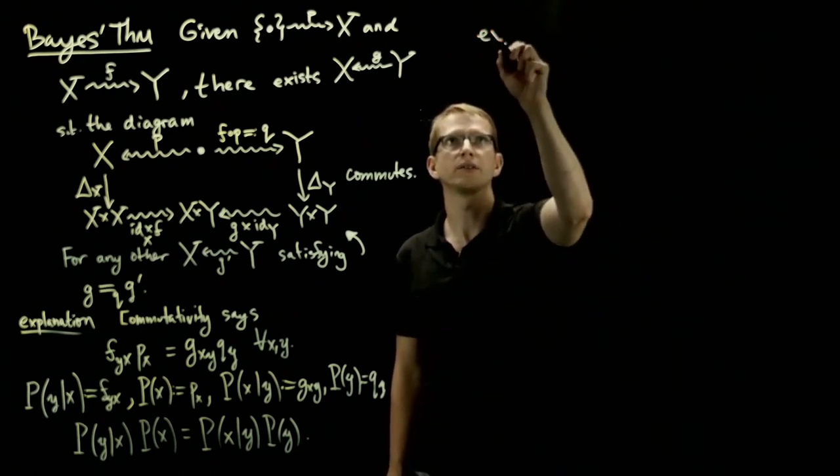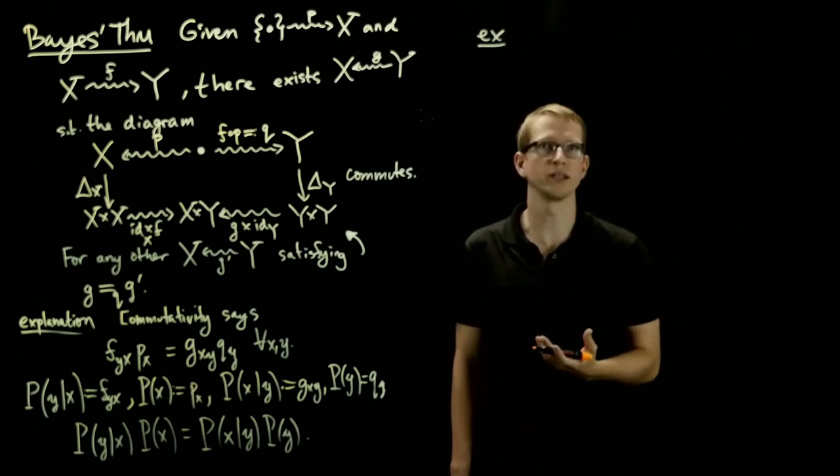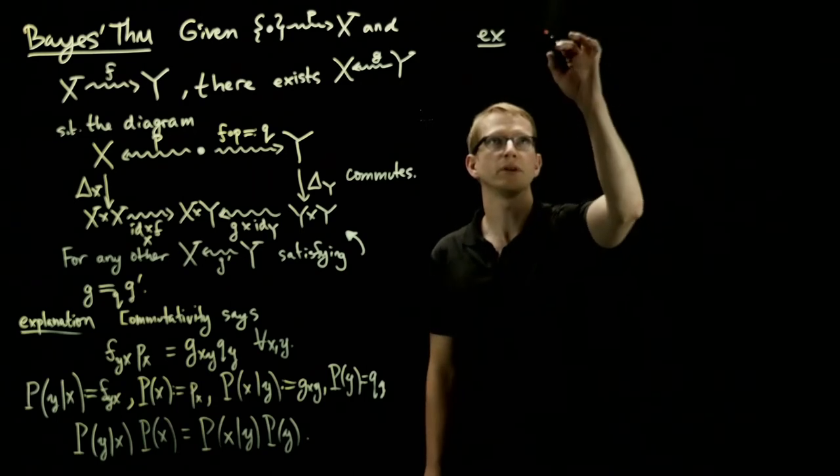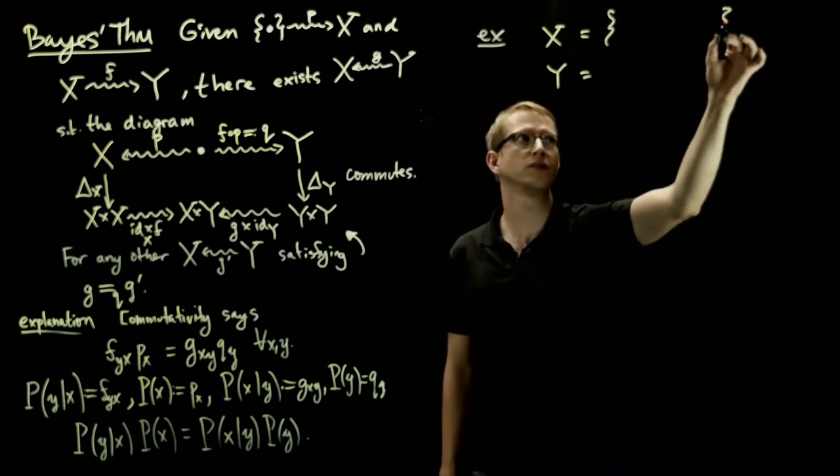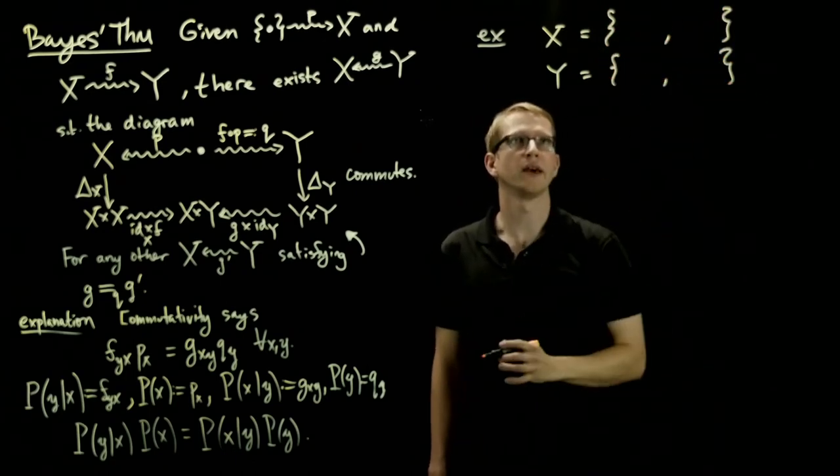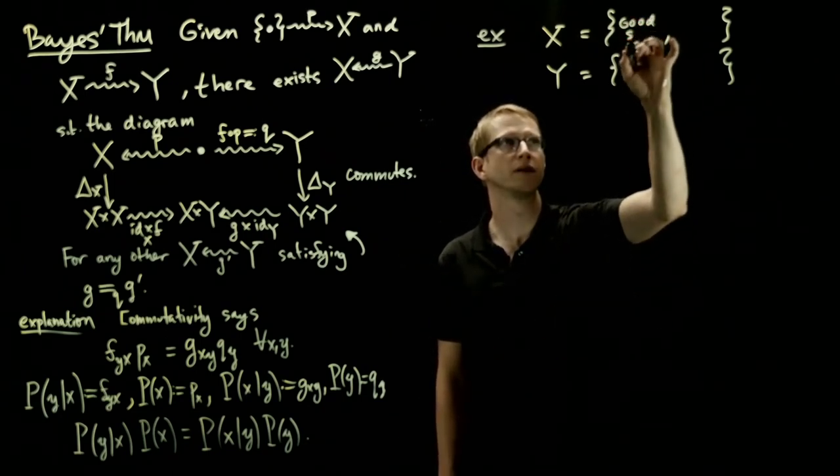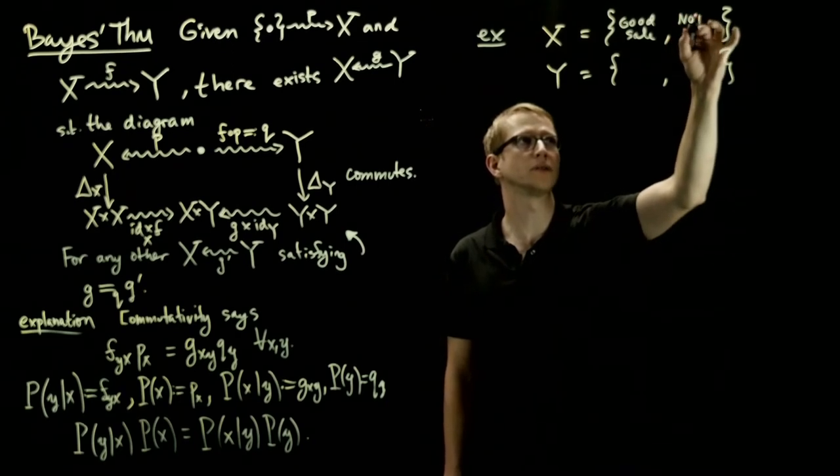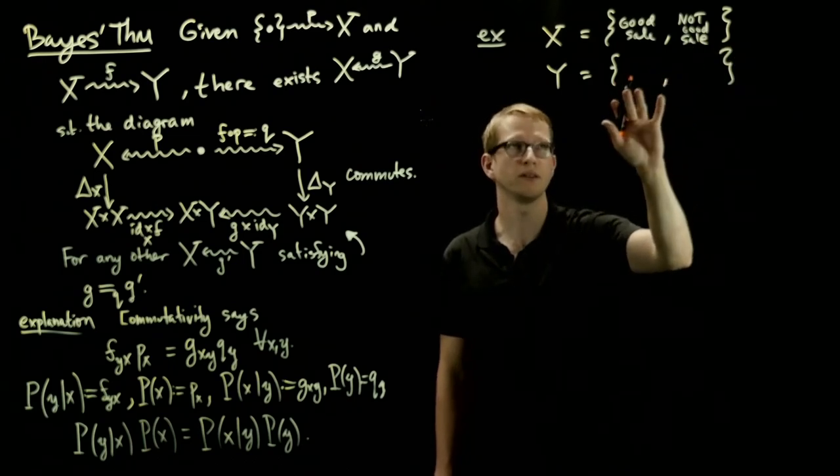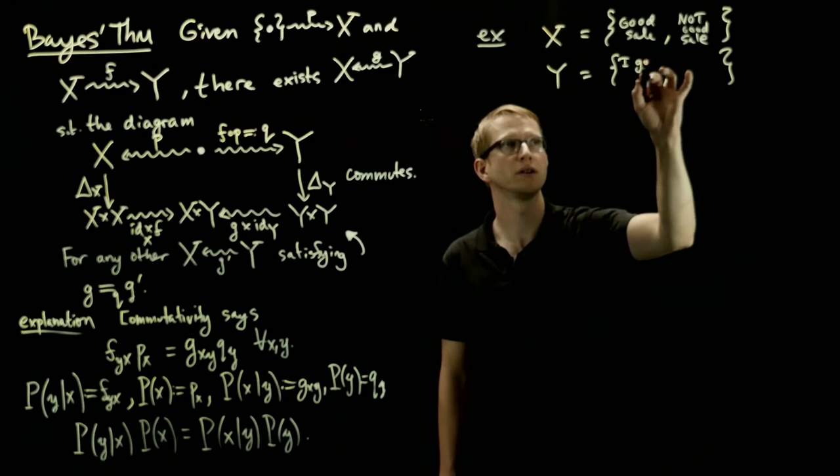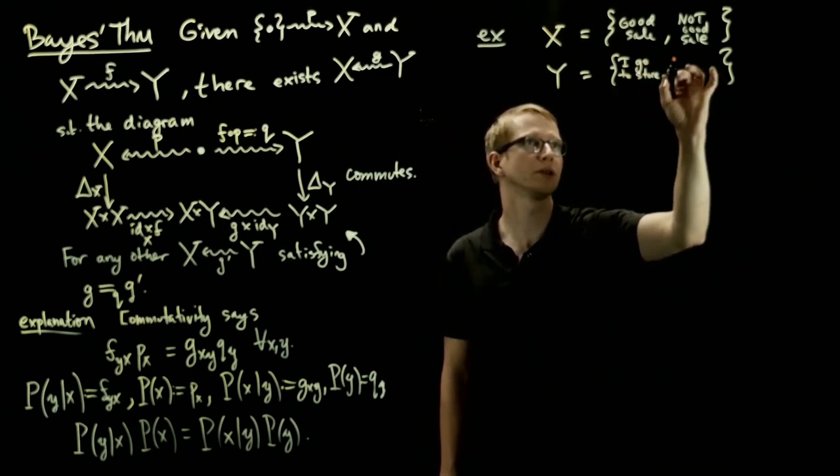So let's look at our earlier example, just to see what this is saying and how to interpret it in sort of a real-life situation. So if you remember, we had x and y, two sets with each of which contains two elements. And x corresponded to the set where there's a good sale, and the other element was not a great sale, not a good sale. And y is the set of elements, the set containing the elements: I go to the store, the grocery store, or I don't go.